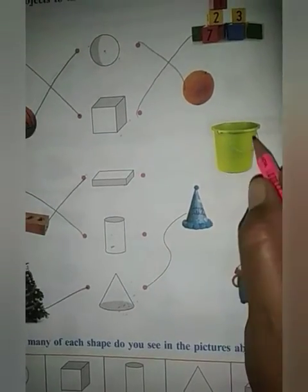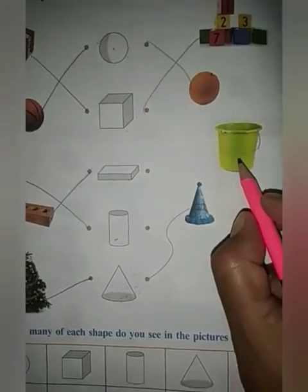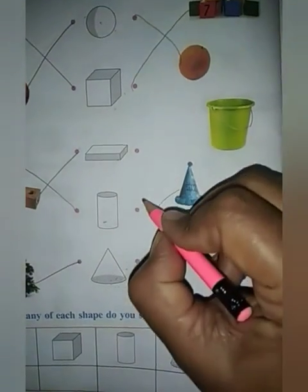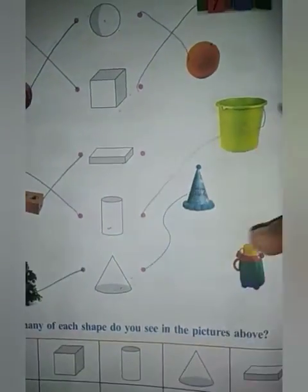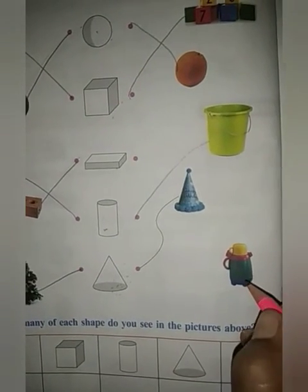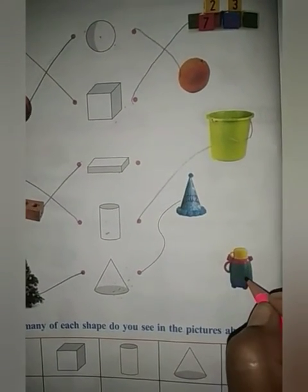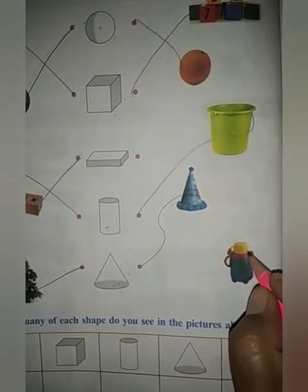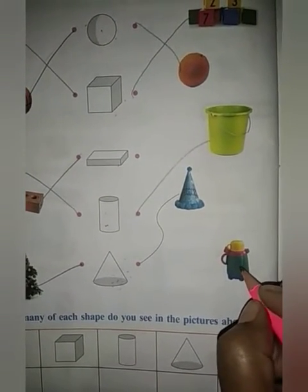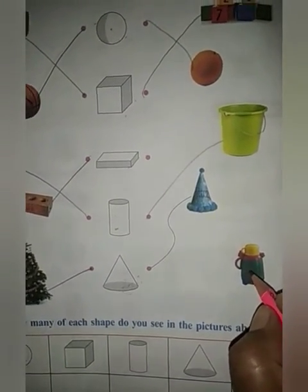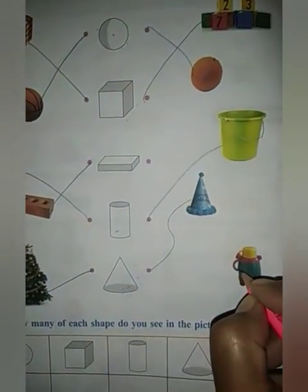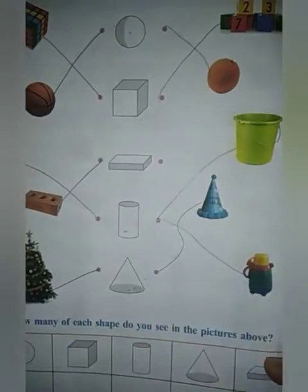Next is a bucket. What is the shape of a bucket? Yes — cylinder. Next one is a water bottle — it is also in the shape of a cylinder. So we will match it with cylinder.